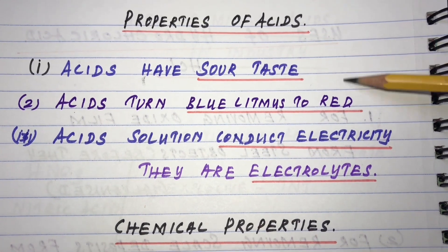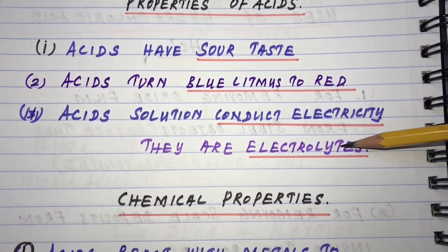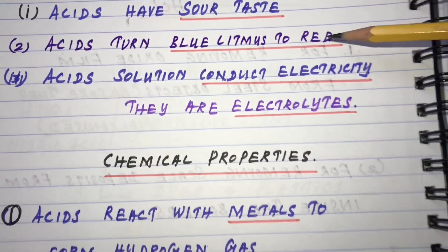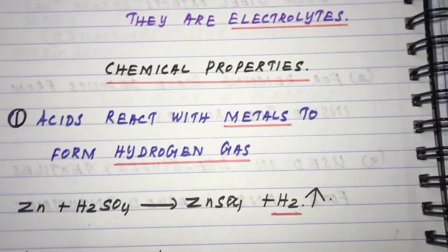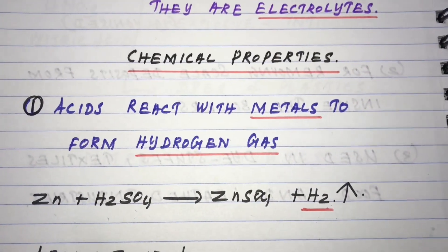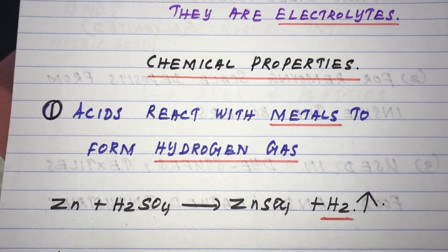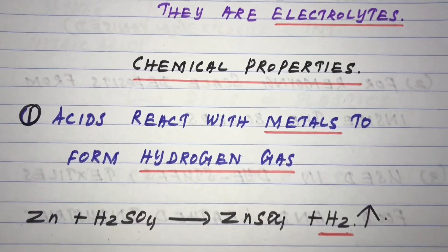So these are the general characteristics of acid. Now moving to the chemical properties of acid.